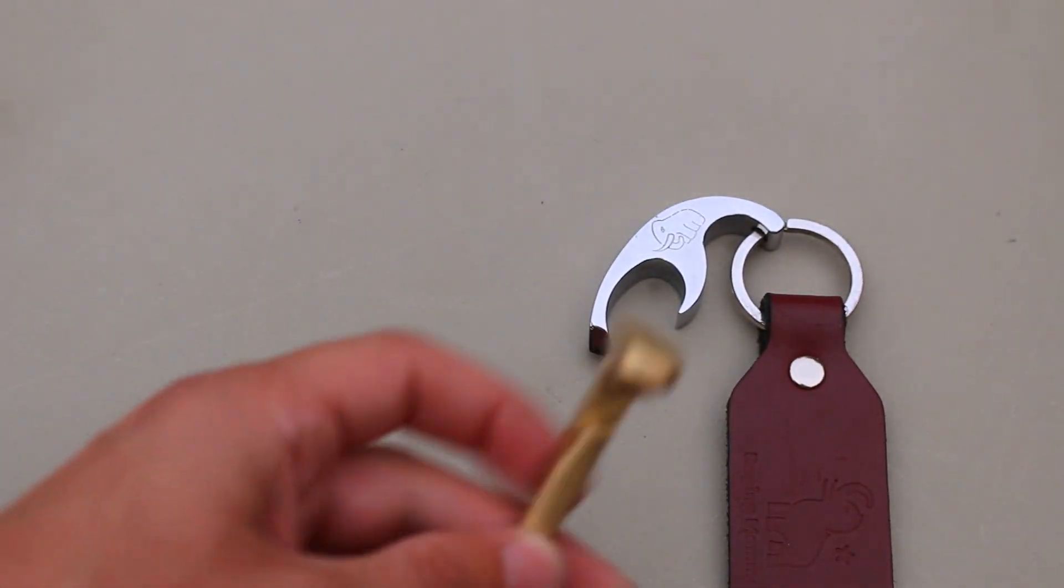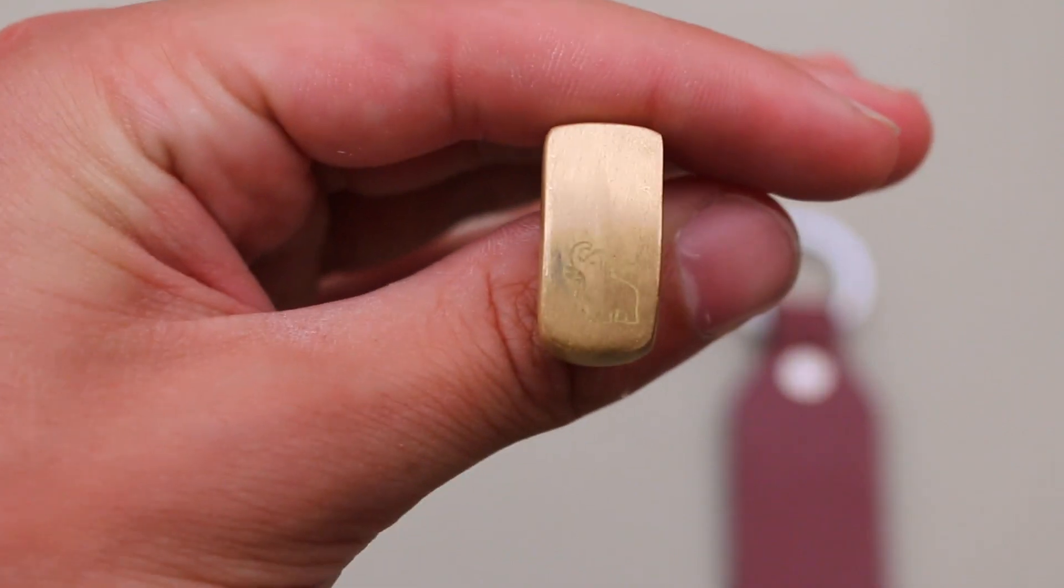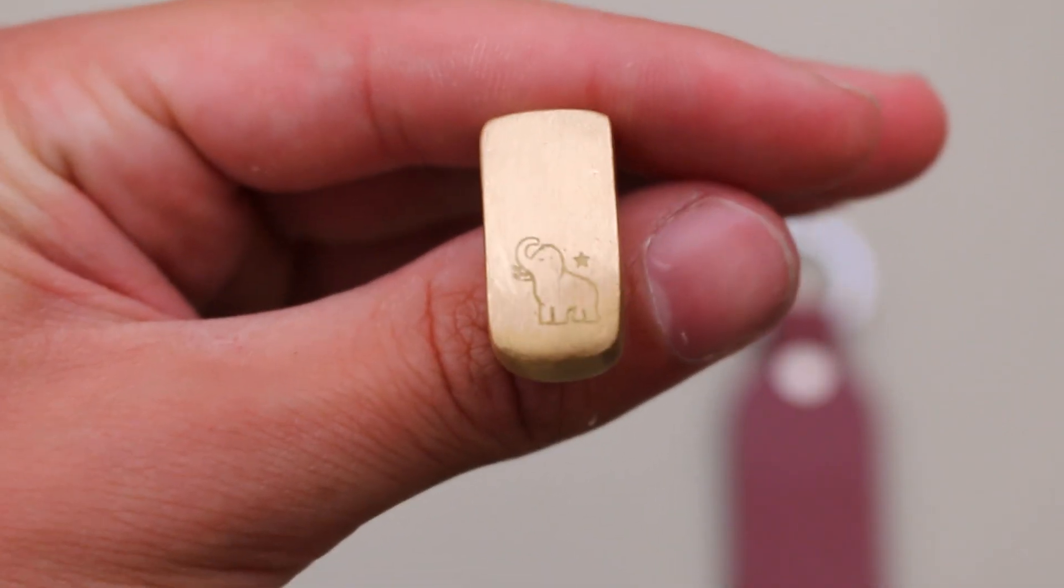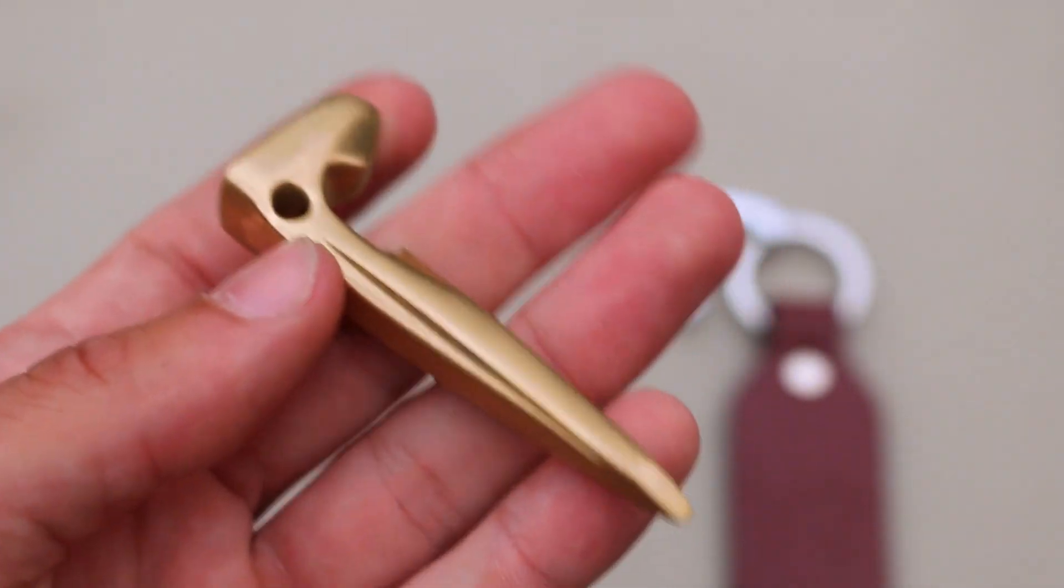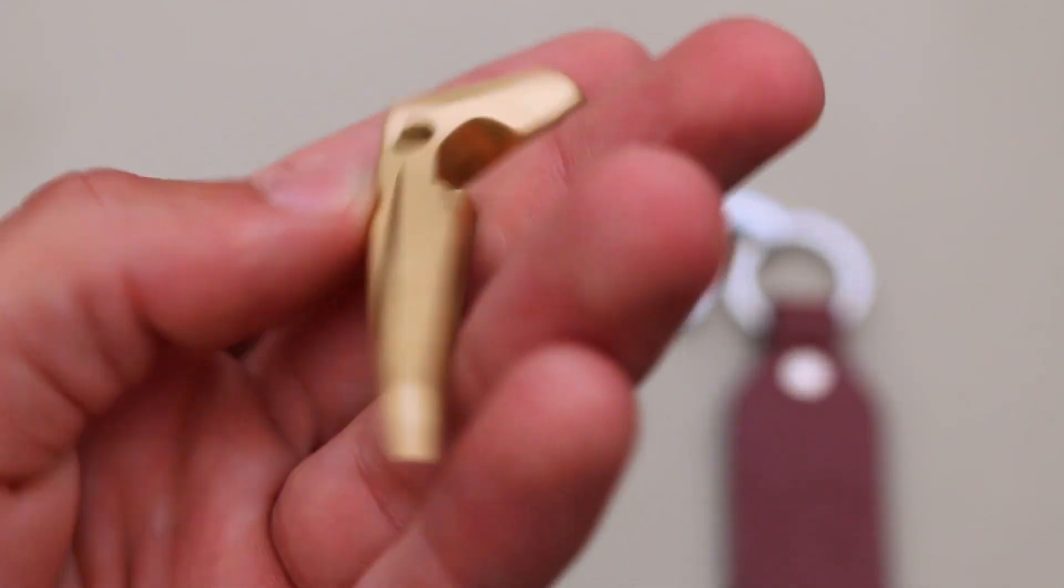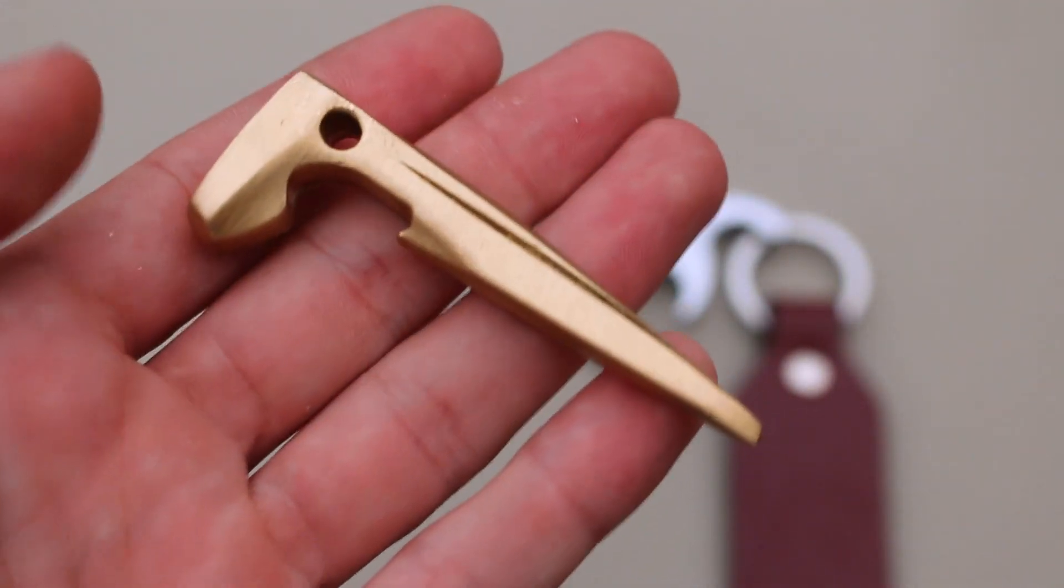And over here we have the brand new Beer Spike, which I just got. Let's see if I can get it to focus in on the new logo that it's got stamped on the top. This guy is made out of brass, has a nice bit of weight to it with a good spike, and I'm going to be comparing the two.